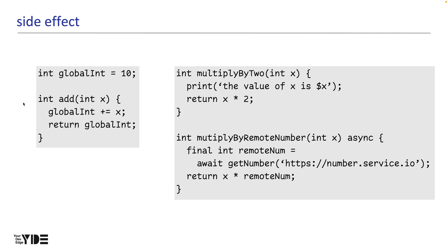For example, consider a function that updates a global int defined outside the add function. If you later call this function elsewhere, you might get different outputs for the same input. Side effects also include functions like multiply_by_2, which prints to the console, and multiply_by_remote_number, which is not guaranteed to always give the same output. In the case of multiply_by_2, you might wonder why it is a side effect — according to the definition, it affects the outside beyond the scope of the function, and here the console corresponds to outside. Side effects are not inherently bad; we frequently use them while coding. However, they should be handled well, otherwise unexpected results or errors may occur.